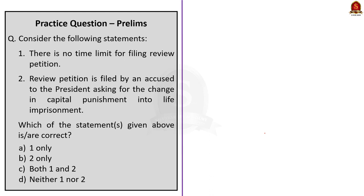Consider the following statements. Statement 1: There is no time limit for filing a review petition. From our discussion, we know this is wrong because a review petition must be filed within 30 days of the final judgment — so Statement 1 is incorrect. Statement 2: A review petition is filed by an accused to the president asking for the change of capital punishment into life imprisonment. This statement is totally wrong — a review petition can be filed by anybody against the order of the Supreme Court. So the correct answer is option D: neither one nor two.